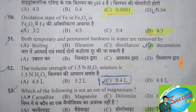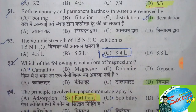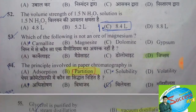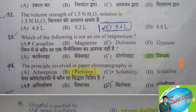Both temporary and permanent hardness in water are removed by — the correct answer is option D, distillation. The volume of 1.45 normal H2O2 solution — the correct answer is option C, 8.4 liters.